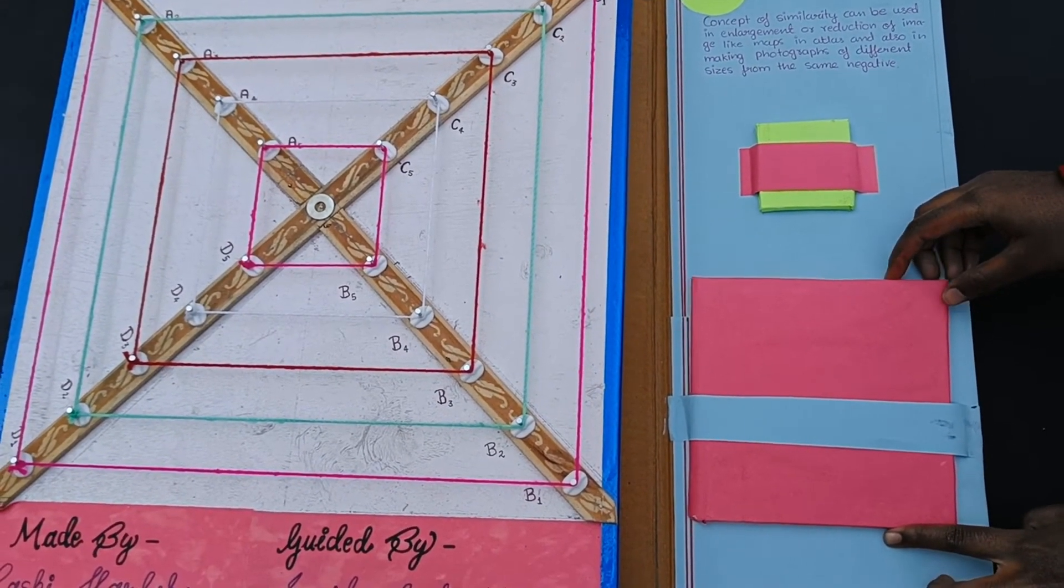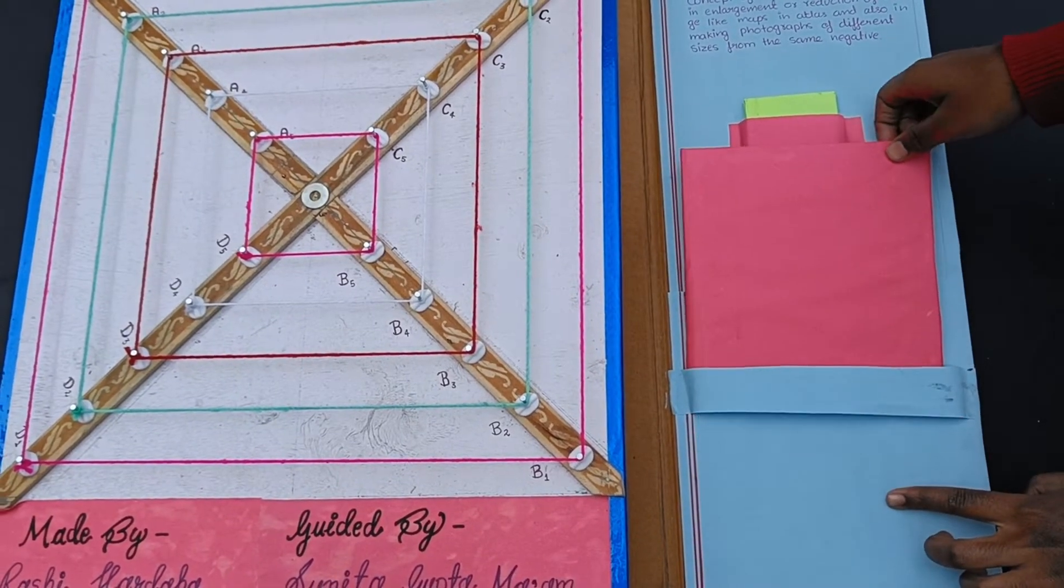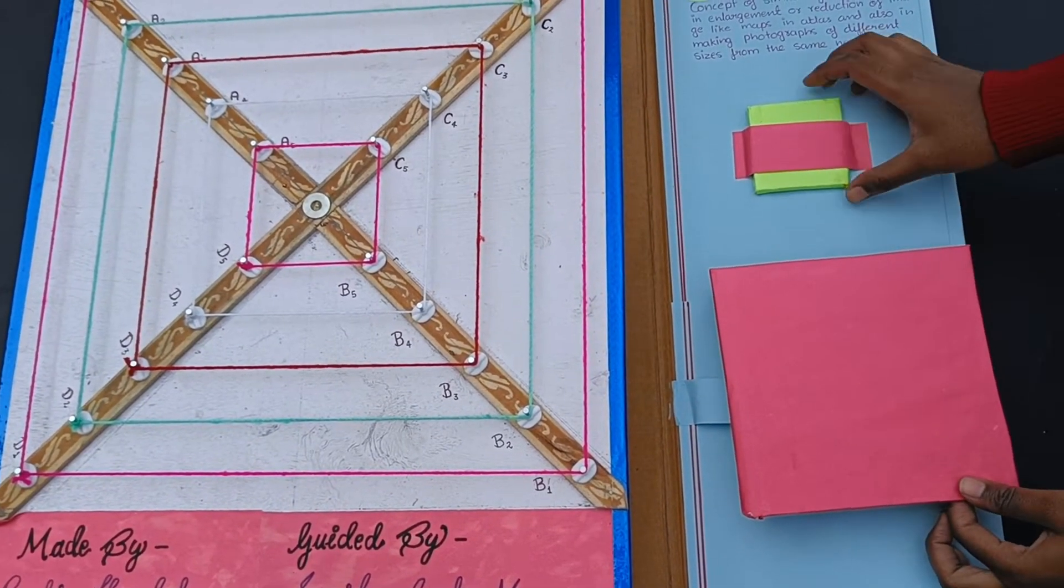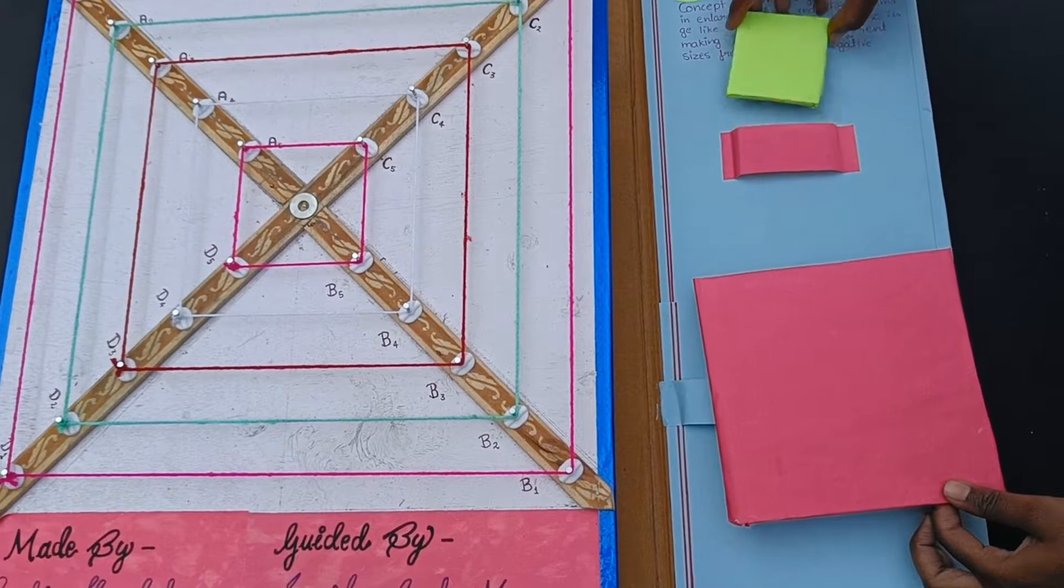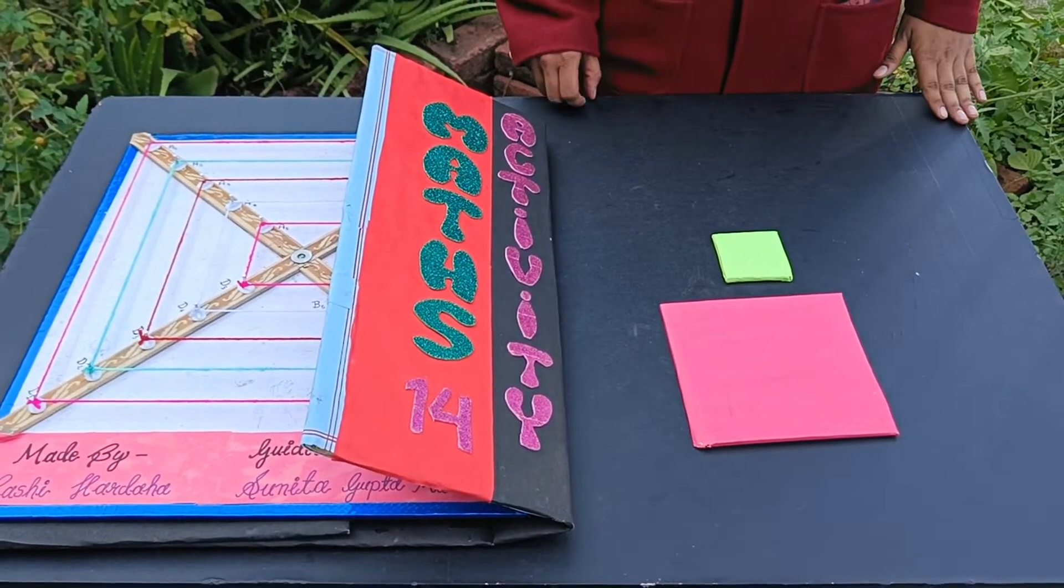Two polygons of the same number of sides are similar if their corresponding angles are equal and their corresponding sides are in same ratio. Let's take an example.